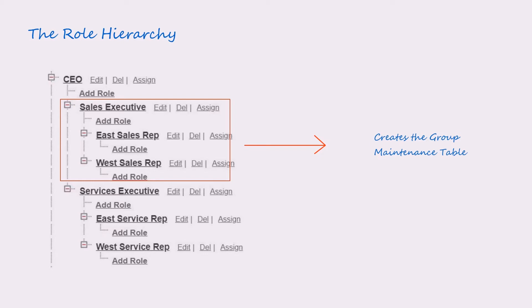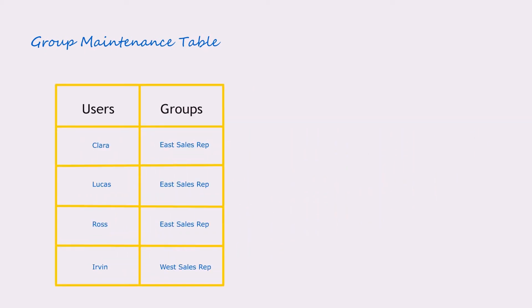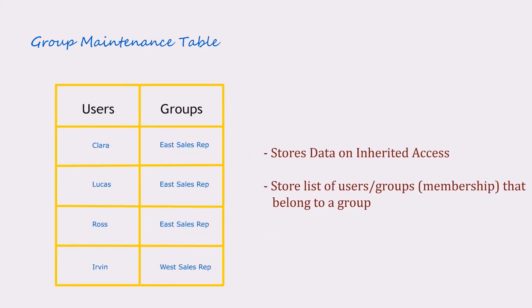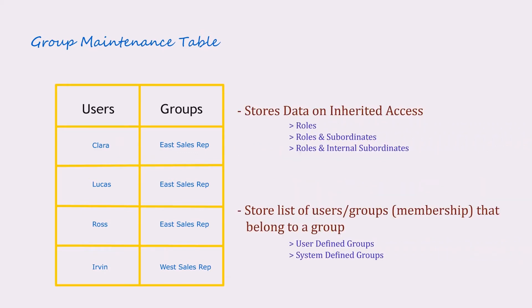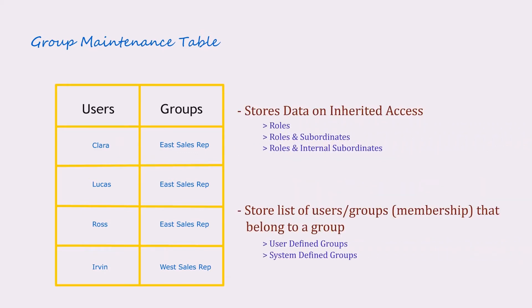Now let's see in detail what happens when the role hierarchy is set up. The role hierarchy setup creates this group maintenance table. You can see Clara is part of each sales rep group, and her managers Lucas and Rose are also part of the same group, where the grant access using role hierarchy OWD setting is applied.